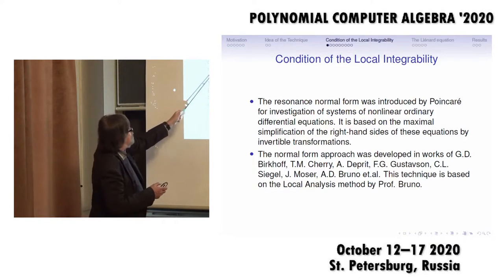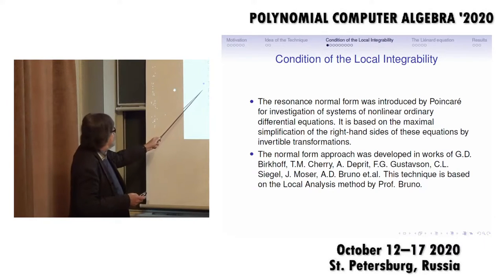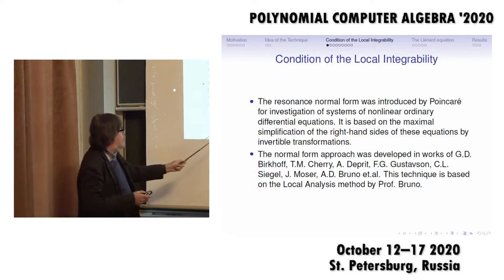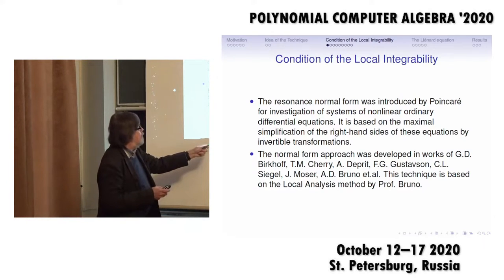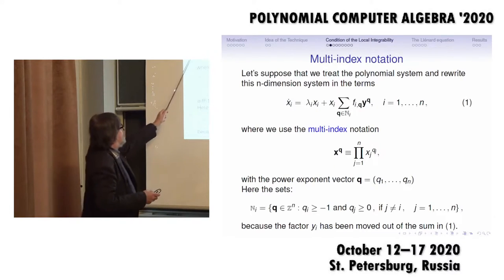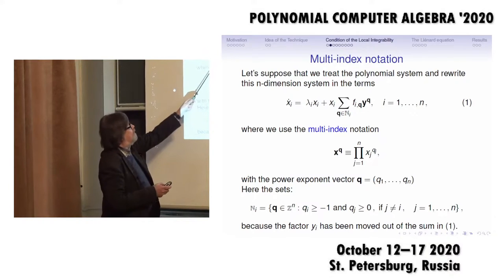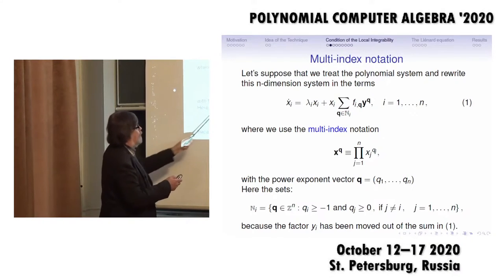The resonance normal form was introduced by Poincaré. Many mathematicians have worked in this direction. We will use the local analysis method by Professor Bruno. We have the equation in multi-index notation.